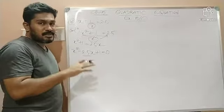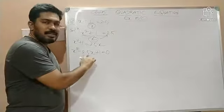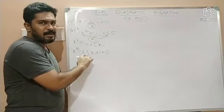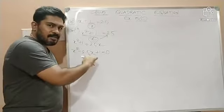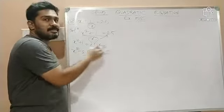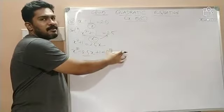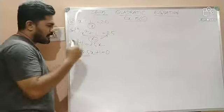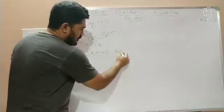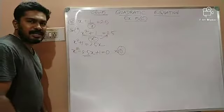So, it is not possible or it is not permitted to multiply only this 2.5 with 10. If you are multiplying with 10, the entire equation, that is the left hand side as well as the right hand side of this equation, should be multiplied with what? 10. So, let me multiply this whole equation with what? 10.